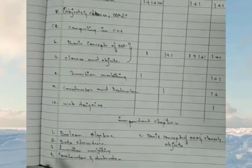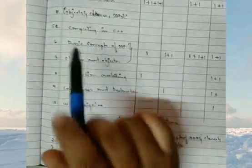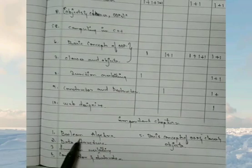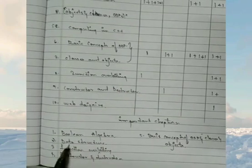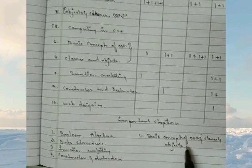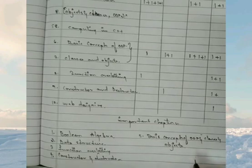From this above given blueprint you can see that more of the marks comes from the chapters boolean algebra, data structure, function overloading, constructor and destructor, basic concepts of OOPS and objects and classes. So if you learn these chapters you will get the maximum marks, some around 40 to 45 marks out of 70 marks.